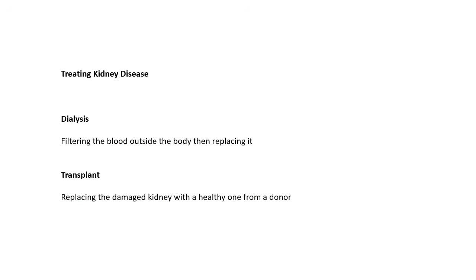Treating kidney disease. If your kidneys aren't working properly — for whatever reason, maybe due to an accident or damage — one option is dialysis. What can happen is we filter the blood outside of your body and then replace it. Another option is a kidney transplant, where the damaged kidney is replaced with a healthy kidney from a donor — either a generous living donor or from someone who died recently. Dialysis and transplant are two options.